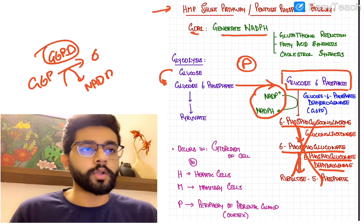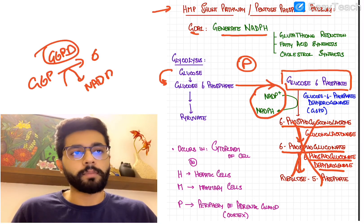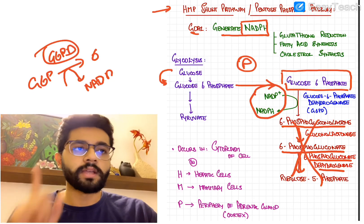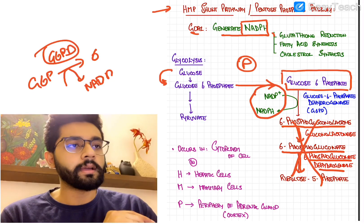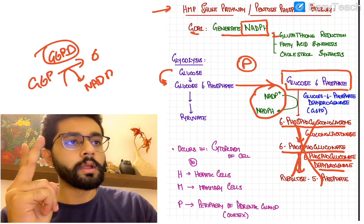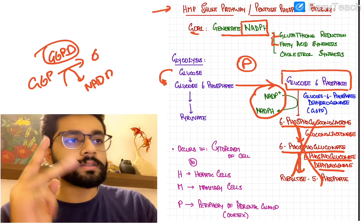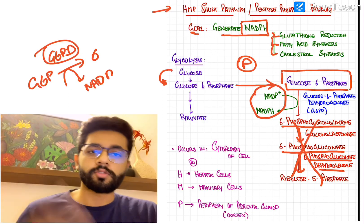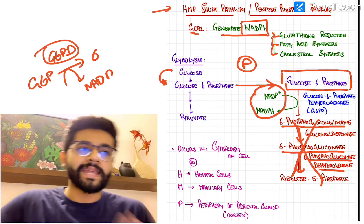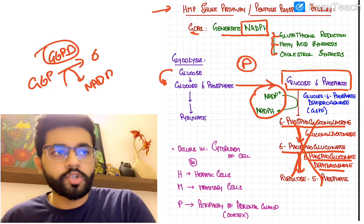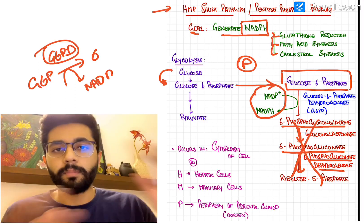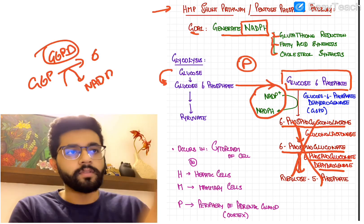This reaction generates NADPH from NADP+. The main goal of the HMP shunt pathway is to generate NADPH, which later plays an important role in the reduction of glutathione, fatty acid synthesis, and cholesterol synthesis.